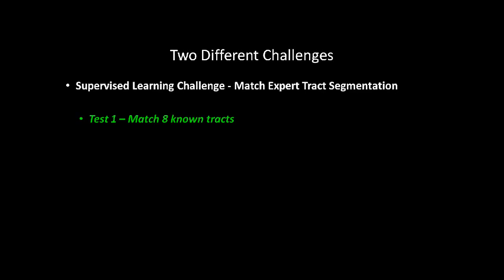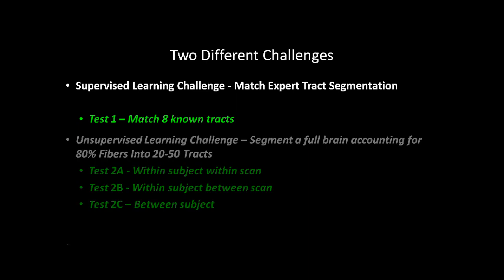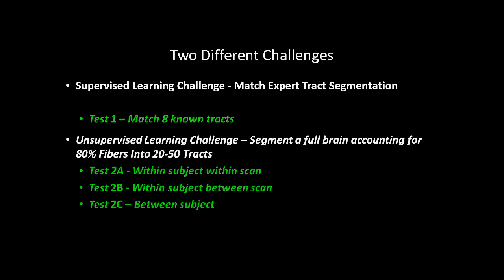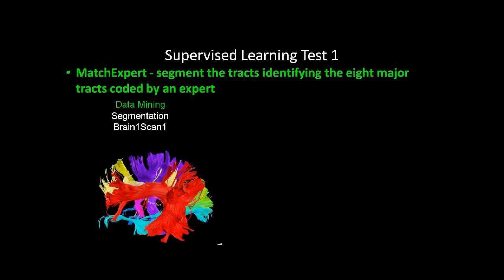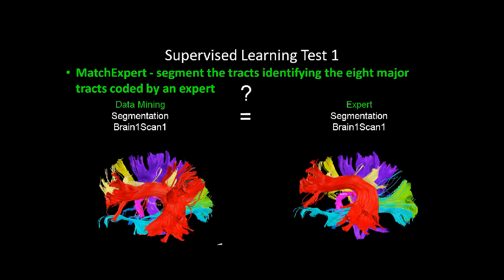There are two different challenges in the competition. The first is a supervised learning challenge matching an expert track segmentation based on eight known tracks. The second is an unsupervised learning challenge that segments a full brain accounting for 80% of the fibers into 20 to 50 tracks. In the supervised learning test one, we match the expert segmentation of tracks, identifying them based on your data mining method and seeing how well that matches the expert segmentation.